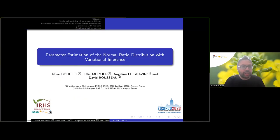Hi, everyone. I am Nizar Boulel, Assistant Professor from Institut Agro-Rennes and Institut de Recherche en Horticulture et Semence from France. Today, I will show you my presentation about parameter estimation of a normal ratio distribution with variational inference.